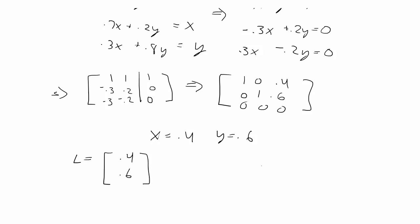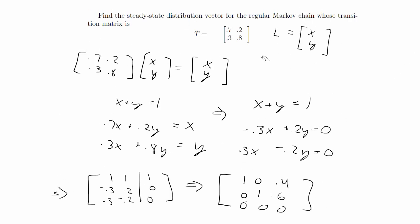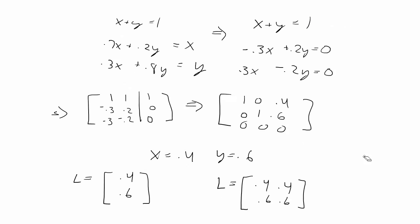So your answer written as the limiting vector or steady-state vector is [0.4, 0.6]. Sometimes instead of vectors they're called steady-state matrices, in which case you just write it as [0.4, 0.6] and repeat the column as many times as there are columns in your transition matrix — but it's the same thing. Then I'll do the 3 by 3 matrix example next.